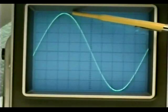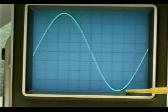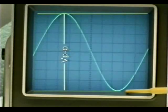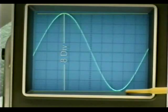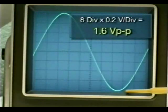In this example, we have eight divisions of vertical deflection from the uppermost positive peak of the waveform to the lowermost negative peak of the waveform. Since our vertical attenuator is set to 0.2 volts per division and we have eight divisions of vertical deflection, this results in a 1.6 volt peak-to-peak waveform amplitude. All we have to do is multiply eight divisions by 0.2 volts per division, which gives us 1.6 volts peak-to-peak.